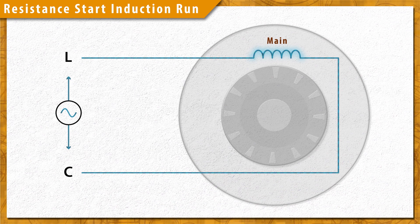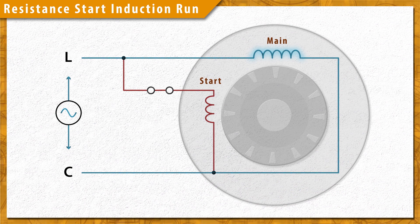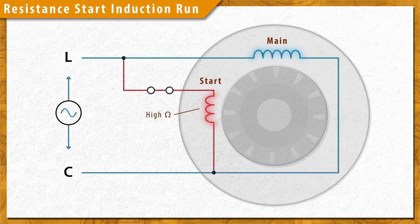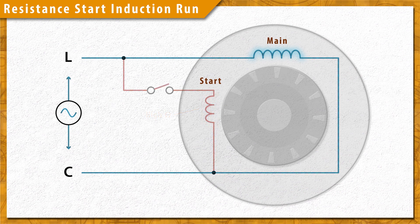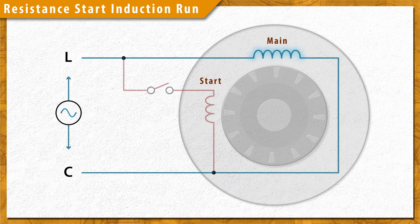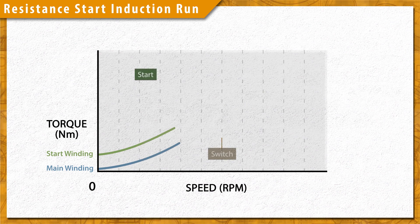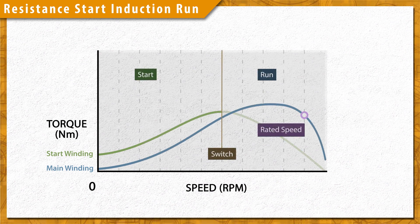Resistance start, induction run, or RSIR motors don't use capacitors. Instead, these motors use thin wires to increase the resistance and reduce the winding current. This weakens the magnetic field generated in the start winding and causes it to lag behind the magnetic field in the main winding. Once the motor is up to speed, the start winding is switched out of the circuit, keeping it from overheating. These motors are very cost effective, but have low torque, which is why they are found in blower fans and small appliances.